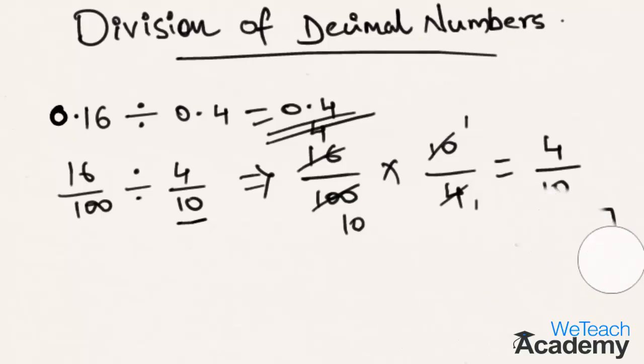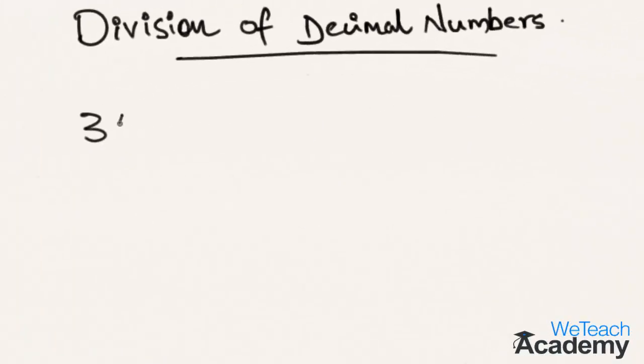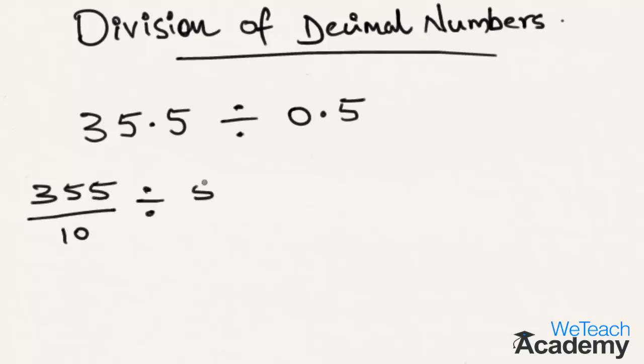Now let us take one more example and try to solve. Let us divide 35.5 divided by 0.5. 35.5 is nothing but 355 by 10, divided by 0.5, which is nothing but 5 by 10.